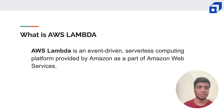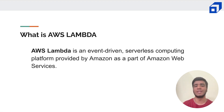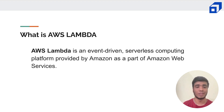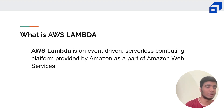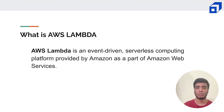The first thing I always do is define what we are trying to understand. So what exactly is AWS Lambda? The basic definition is it's an event-driven serverless computing platform that AWS provides. There are two important terms here: event-driven and serverless computing.